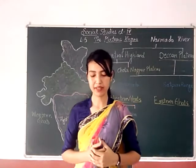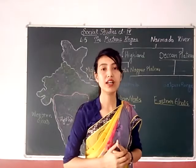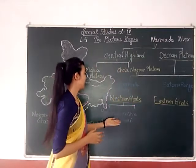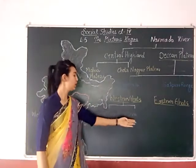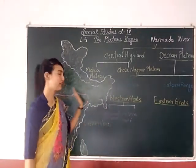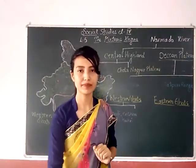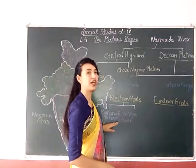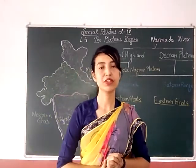The Eastern Ghats have been broken into small hills. Now, Godavari is the longest river in the Deccan Plateau. Godavari flows from the Western Ghats to the east side. So, the longest river in the Deccan Plateau is the Godavari.